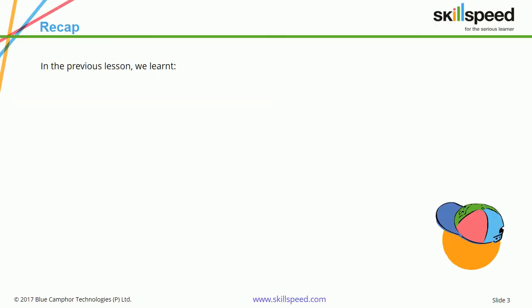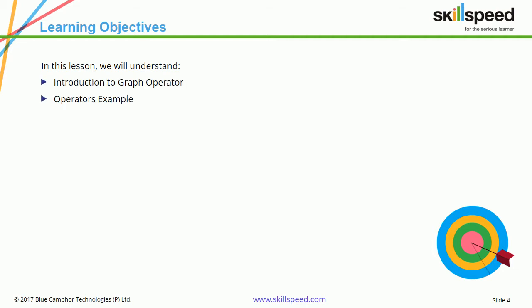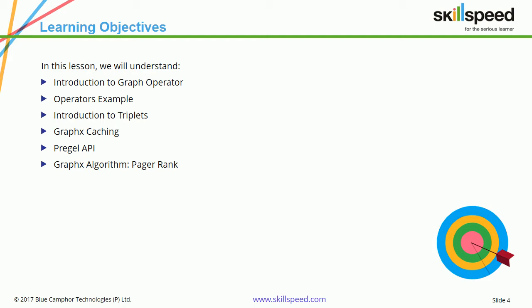To recap, in the last lesson we learned about creating a graph using the vertex RDD and the edge RDD. In this lesson, we will try to understand the different operators you can use on top of a graph. We will also see what a triplet is, GraphX caching, the Pregel API, and the algorithms used in GraphX.